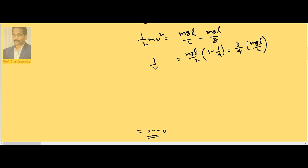So here I can cancel m and m, 2 and 2. Therefore velocity v² equals 3gl by 4, or v equals root of 3gl by 4.